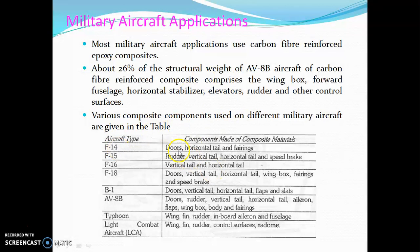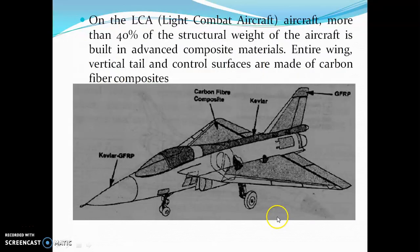For the F-14, composite materials are used for doors, horizontal tail, and fairings. For the F-15, composites are used for the rudder, vertical tail, horizontal tail, and speed brakes. Composite materials are also used on the F-16 for the wing, pin, rudder, inboard elevon, and cruise control surfaces.